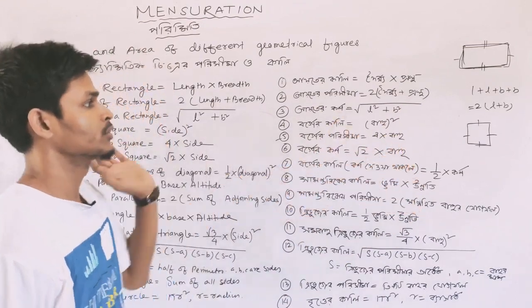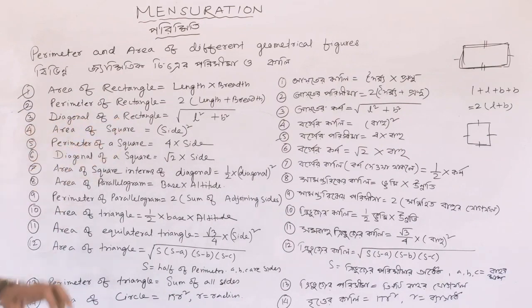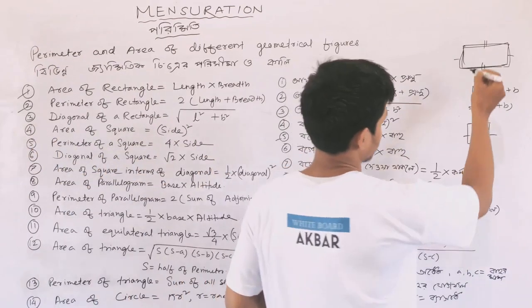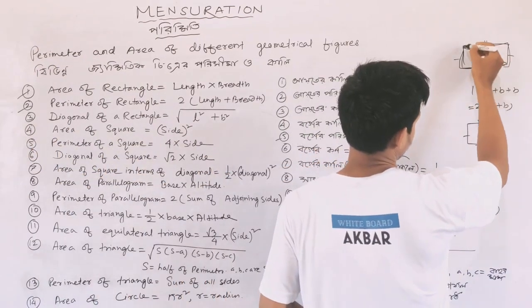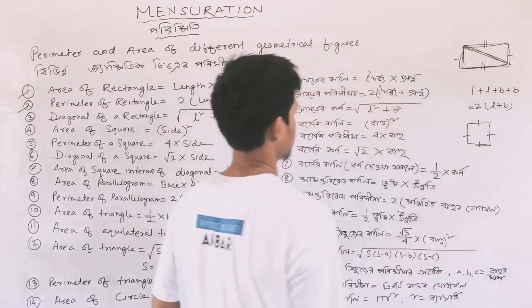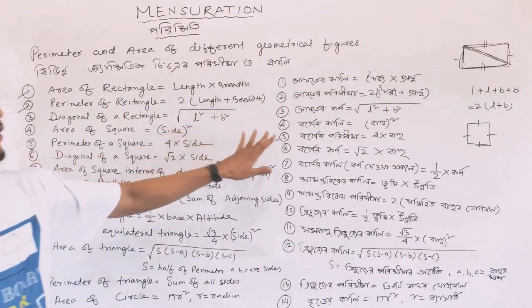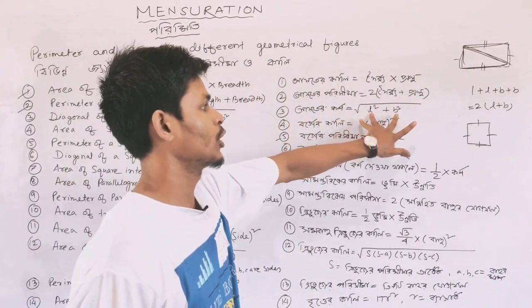Now let's start with the diagonal of a rectangle. One rectangle has a diagonal. The diagonal distance involves both length and breadth. If we start with the formula, we use the square root of length squared plus breadth squared.